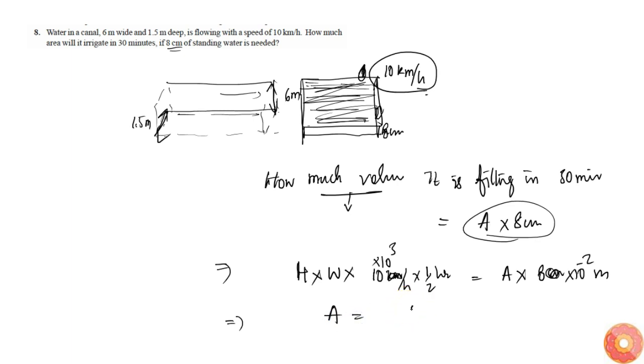Height is simply 1.5 meters into width is 6 meters into this will become 5 into 10 power 3 meters, divided by 8 into 10 power minus 2 meters.